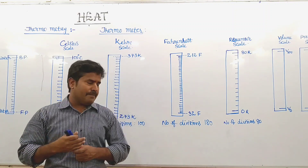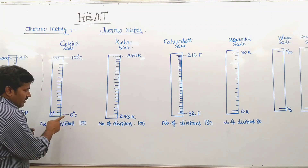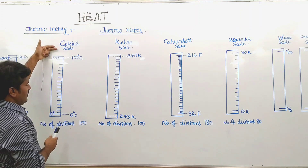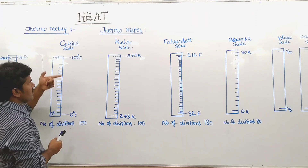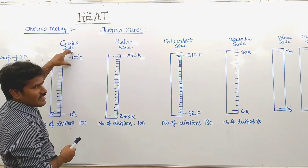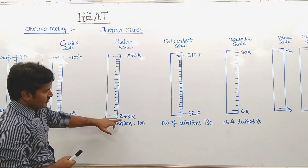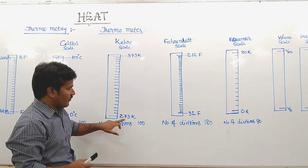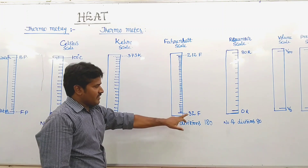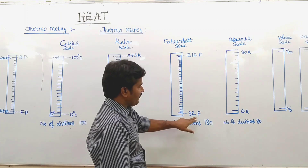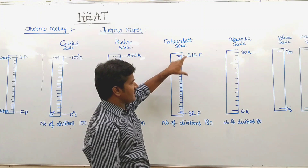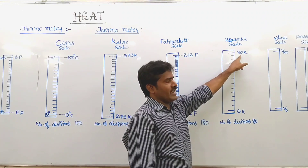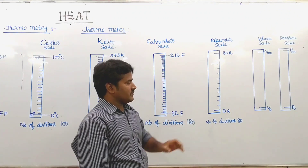In the Celsius scale, the lower limit is 0°C and the upper limit is 100°C. In the Kelvin scale, it is 273 K to 373 K. In the Fahrenheit scale, it is 32°F to 212°F. In the Reimer scale, it is 0 to 80 Reimer.